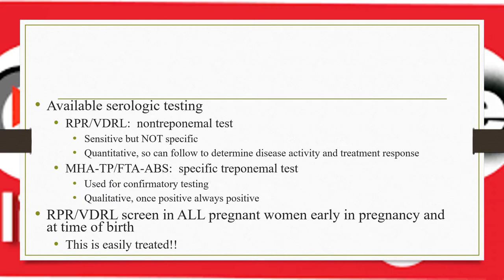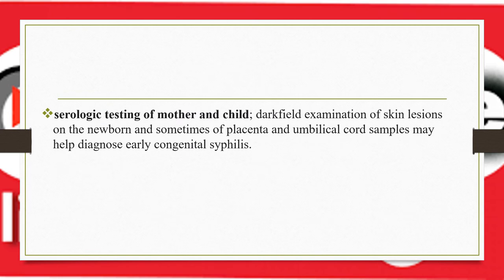Screening should be performed in all pregnant women early in pregnancy and at the time of birth. In our setting, VDRL is done for all pregnant women at antenatal care. After delivery, congenital syphilis can be diagnosed by examining the infant's blood, CSF, and skin lesions, as well as dark-field examination of skin lesions on the newborn and sometimes of placental and cord samples.